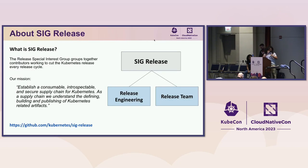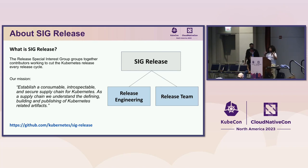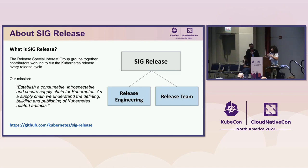So let's begin with what is SIG Release. As some of you may know, Kubernetes has organized itself in several special interest groups. You have special interest groups for all sorts of things that compose the project. We have one for storage, we have one for networking, and we happen to be the group that takes care of releasing Kubernetes every month.